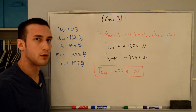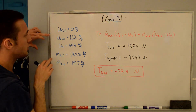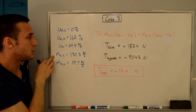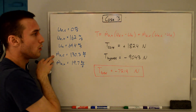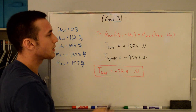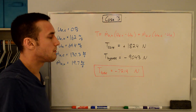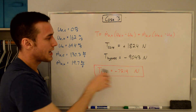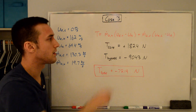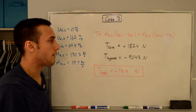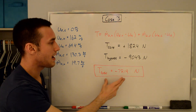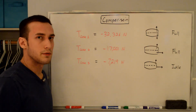For case three, the only change from case two is that we've reduced thrust from full down to idle. The core exit velocity decreases to 162 m/s and the mass flow rates change based on the reduced total air flow. Plugging the new values into the thrust equation, the core thrust is positive 1,824 Newtons and the bypass thrust is negative 9,043 Newtons, giving a total of negative 7,219 Newtons. As with case two, the core tries to accelerate the aircraft but the negative bypass thrust dominates, producing a net deceleration.